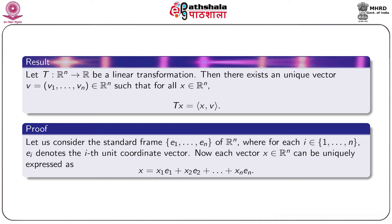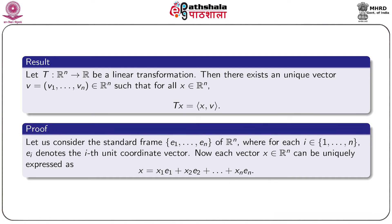Next, another result from linear algebra: let T from Rⁿ to R be a linear transformation. Then there exists a unique vector v = (v₁, ..., vₙ) in Rⁿ such that for each vector x in Rⁿ, we can express T(x) = ⟨x, v⟩. For the proof, let us consider the standard frame {e₁, e₂, ..., eₙ} of Rⁿ, where eᵢ denotes the i-th unit coordinate vector, i.e., eᵢ has i-th component 1 and all others 0. Since this is a basis, each vector x in Rⁿ can be uniquely expressed as x = x₁e₁ + x₂e₂ + ... + xₙeₙ.